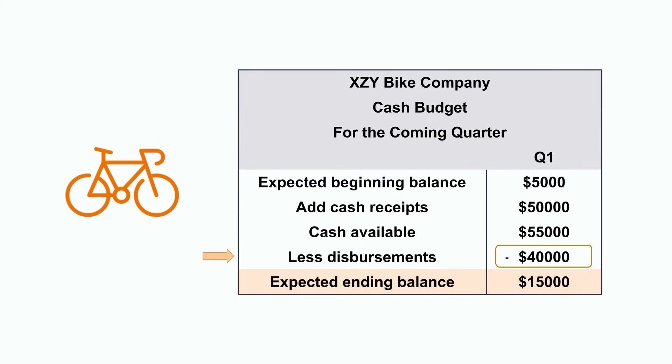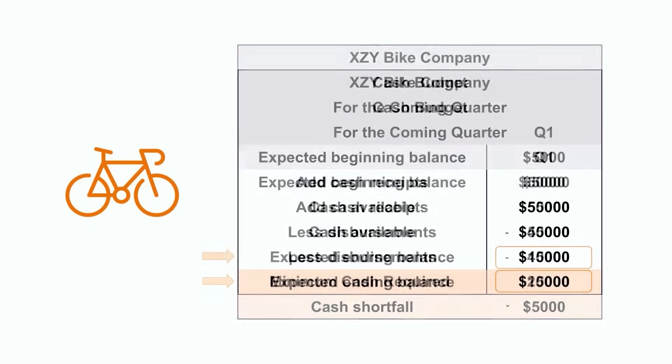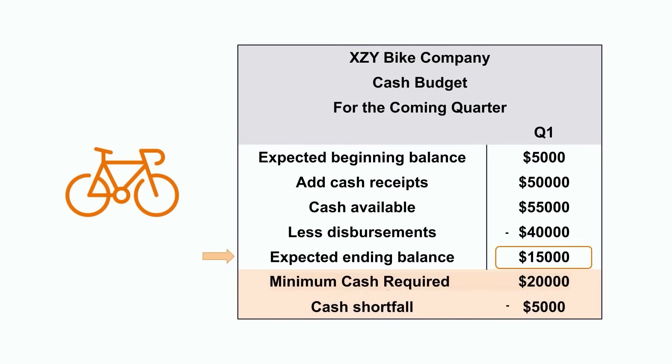We then subtract all the cash the company is planning to spend on things like materials, supplies, and wages, which in this case is forty thousand dollars for the quarter. This means the company is expecting an ending cash balance at the end of quarter one of fifteen thousand dollars. However, since the company has a minimum cash requirement of twenty thousand dollars, and they're only expecting to have fifteen thousand dollars, the company is going to have a cash shortfall of five thousand dollars.